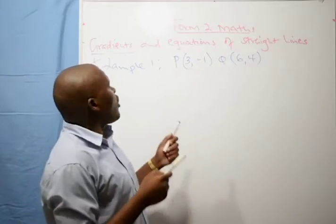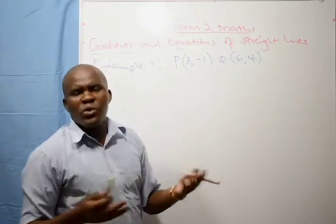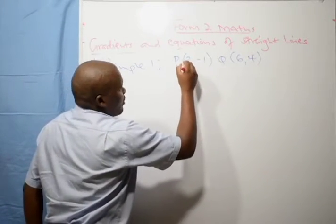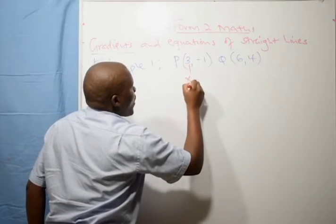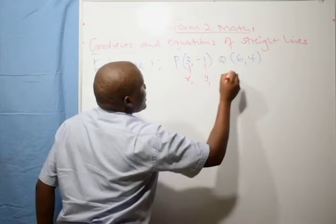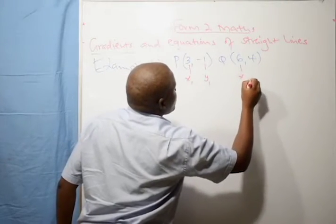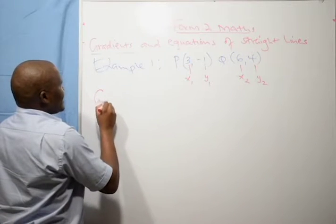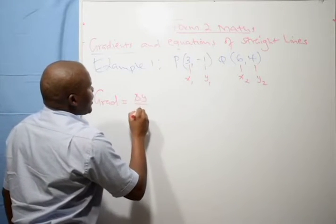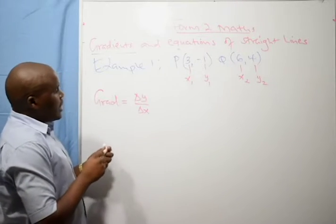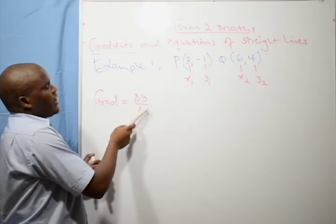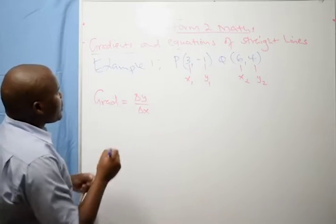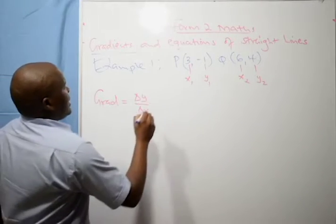How do you find the gradient or slopeness of that line without drawing it? So we say: these are our first points. 3 will be x1, this one is y1, this one is x2, and this one is y2. Gradient equals change in y over change in x. Be very careful here — most students usually do it the other way around, which is wrong. It is change in y over change in x.